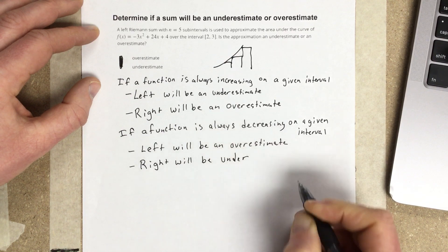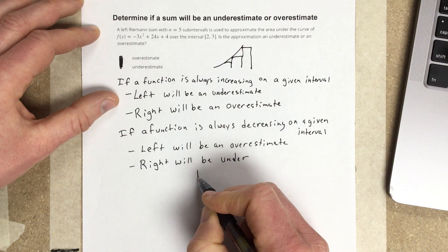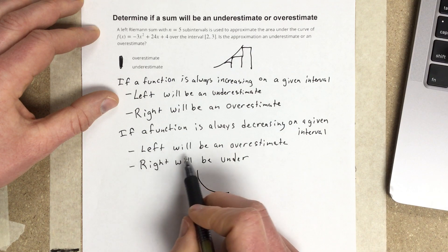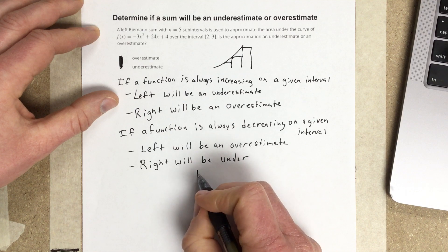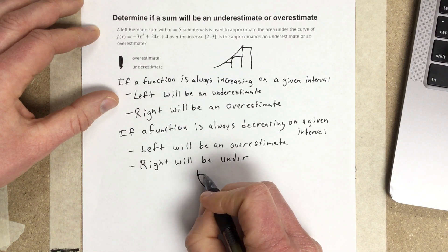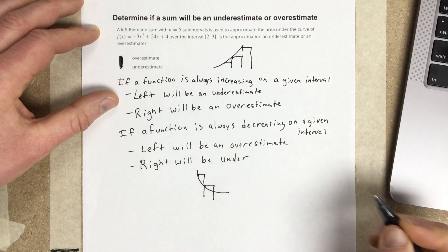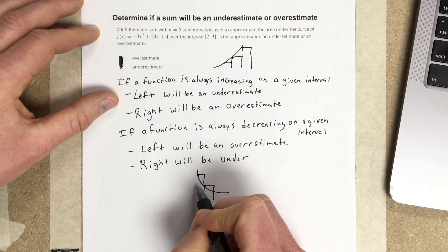And how would that look? If we have a function that's always decreasing, left will be an over. So left would look like this. I'd put a left rectangle like so and left again. You can see there would be an overestimate, and then right would be an underestimate.